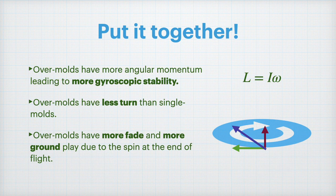So let's put this all together. Overmolds have more angular momentum leading to more gyroscopic stability. Overmolds have less turn than single molds, and overmolds have more fade and more ground play due to the spin at the end of the flight.